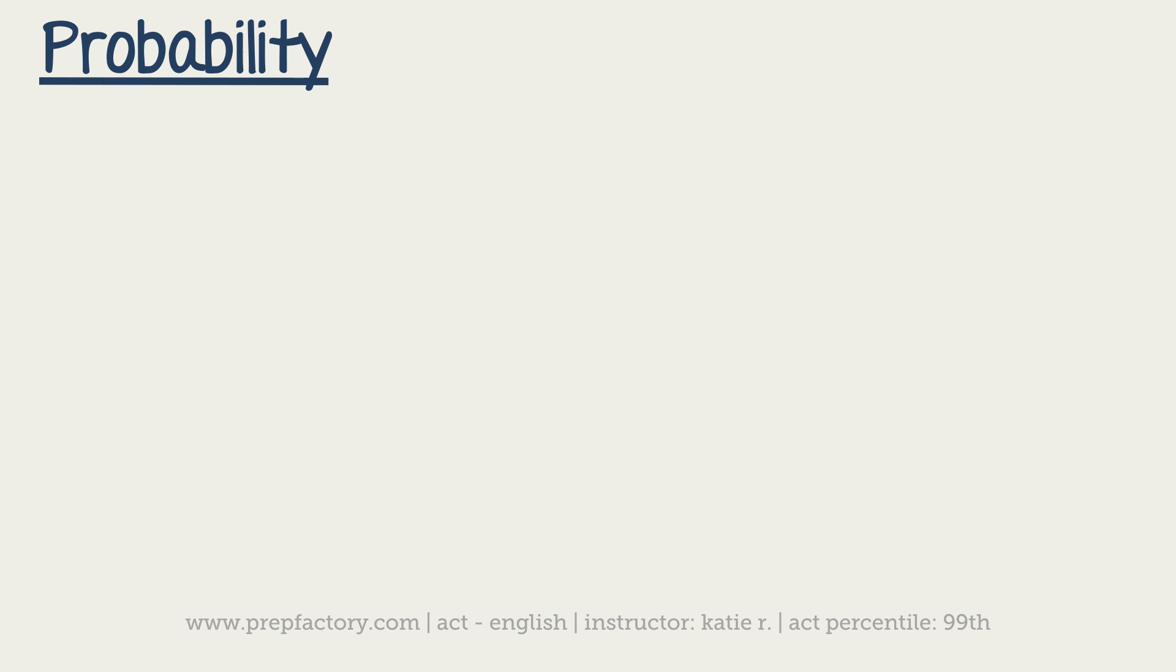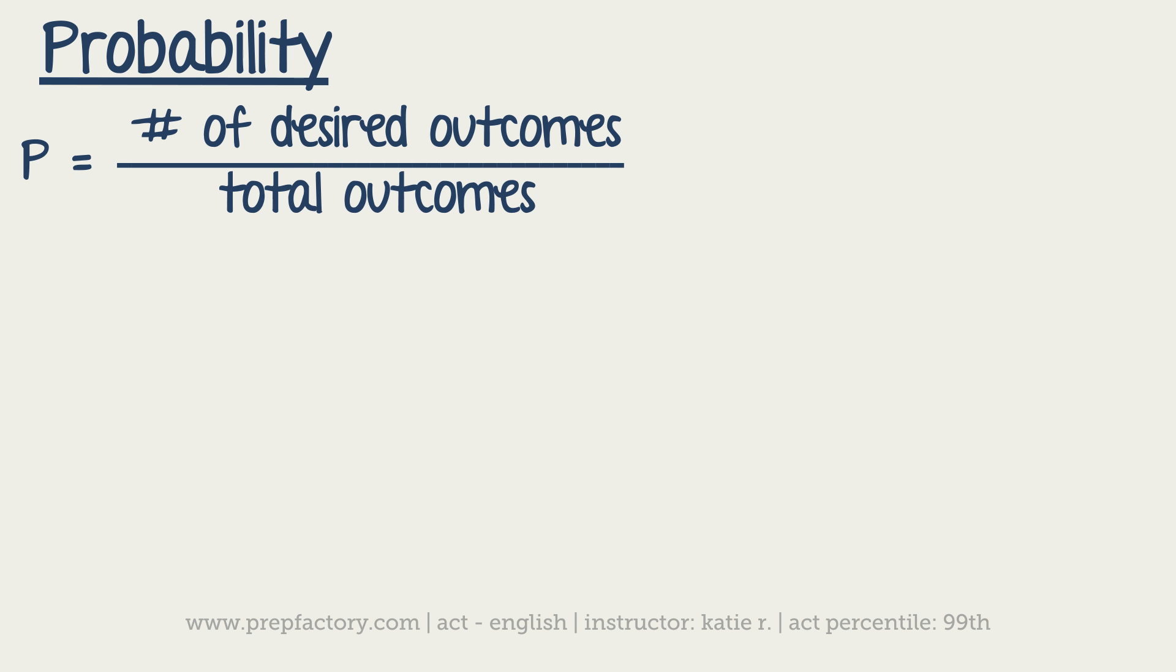So your probability is going to be equal to the number of desired outcomes over your total number of outcomes. So a kind of classic example is marbles in a bag. If you had something like, you have marbles in a bag, six are red, two are blue, let's be patriotic, and ten are white. What is the probability of getting a blue marble, for instance?